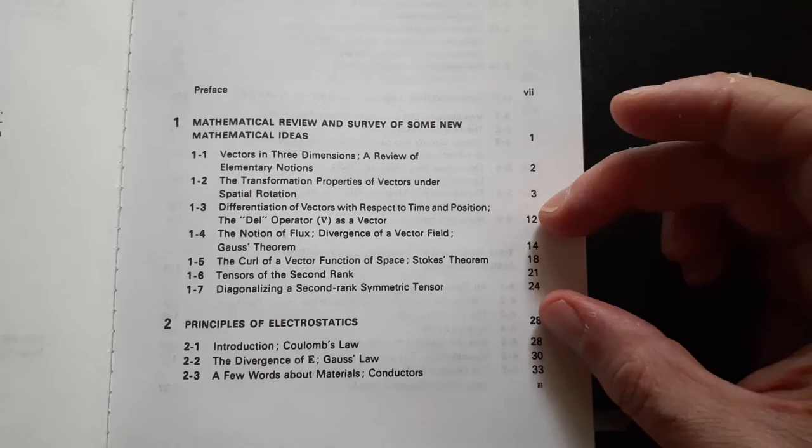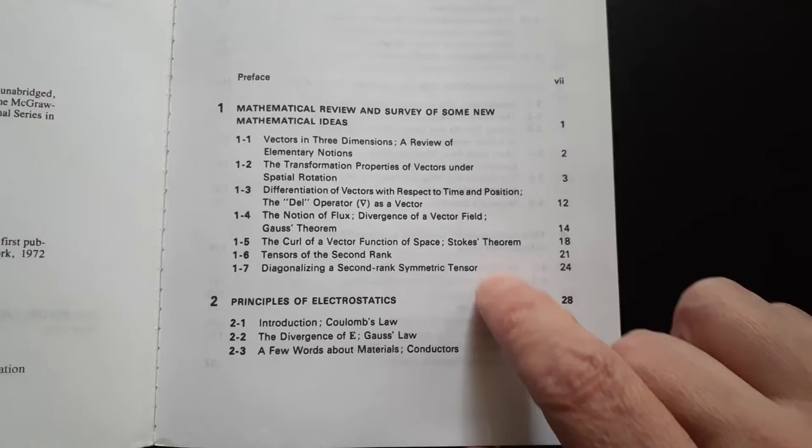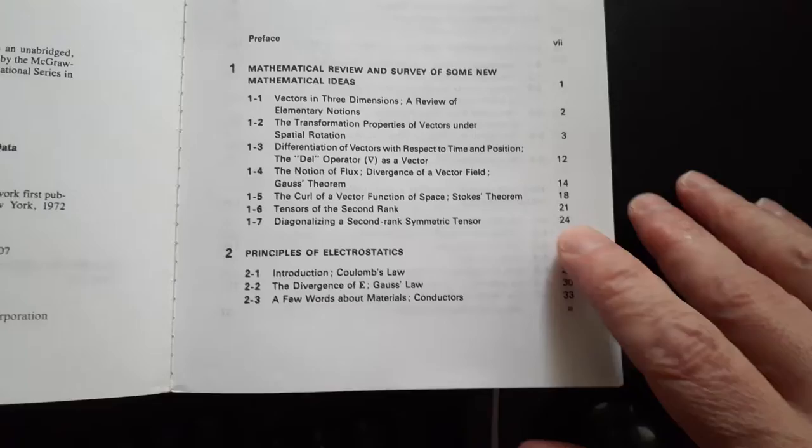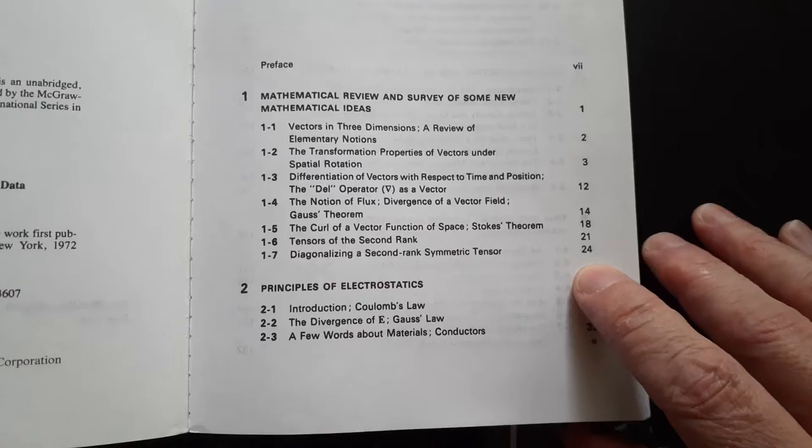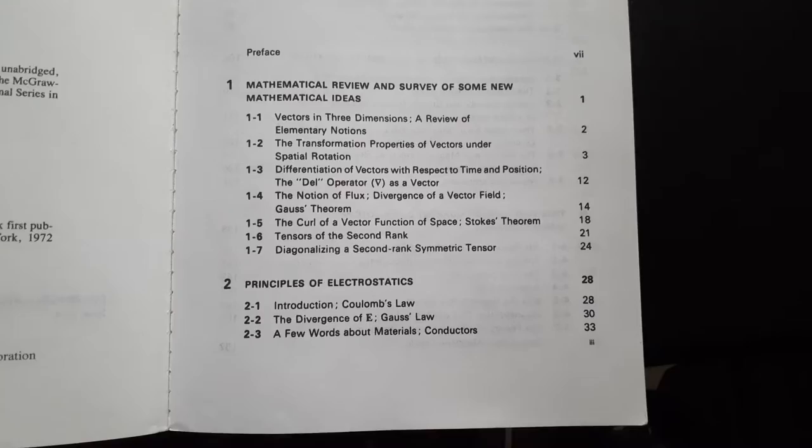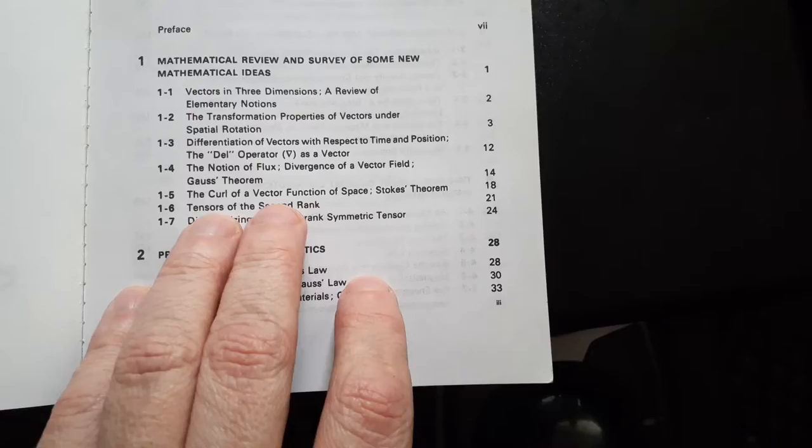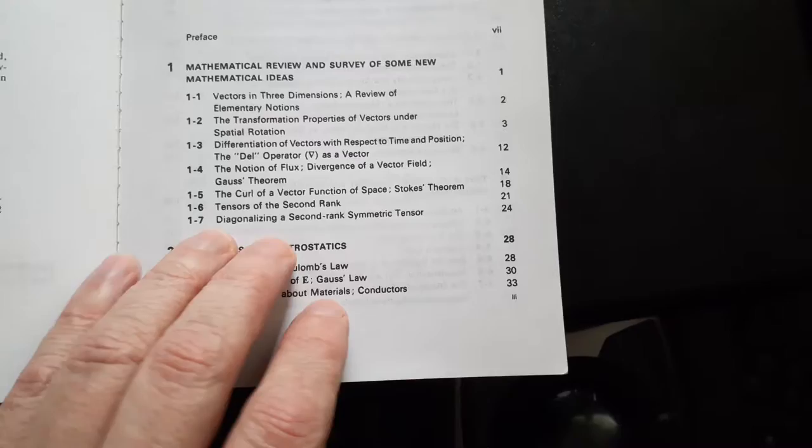Now, the first thing that people do in these videos is they go through the table of contents. I don't know why that's so interesting, but let's go through it. First, it starts off with your basic math review. The only thing you might not be used to if you're ready to tackle, say, a junior level electrodynamics class is the tensors here. Everything else up through there, up through about page 20 or so, that's basically Calculus 3 stuff.